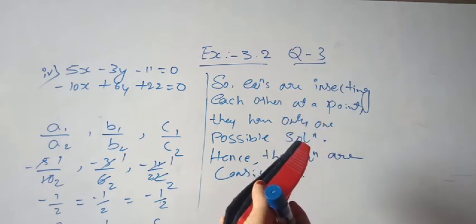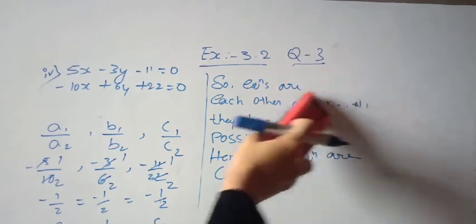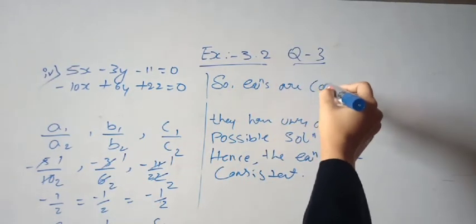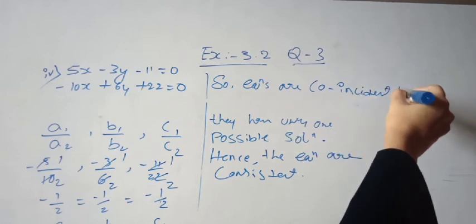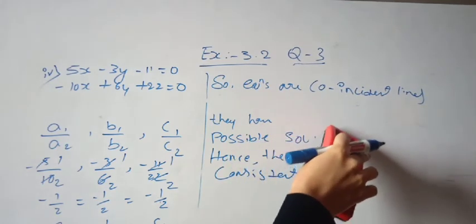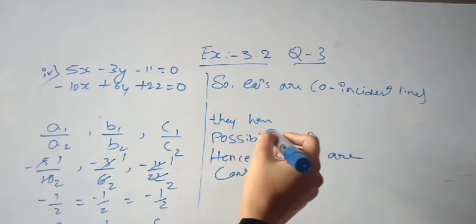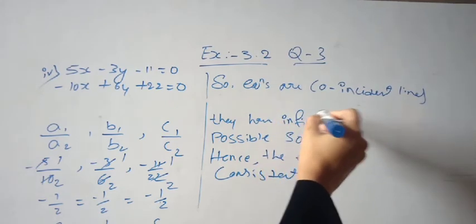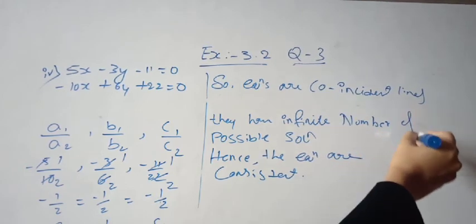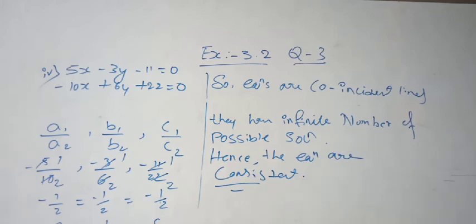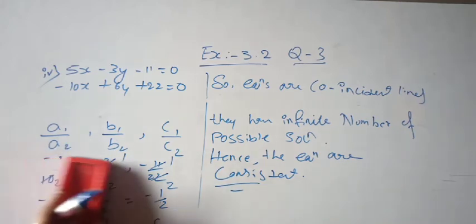Since all three ratios — a1/a2, b1/b2, and c1/c2 — are equal, the conclusion is: the given equations are coincident lines. They have an infinite number of possible solutions. Hence, the equations are consistent.